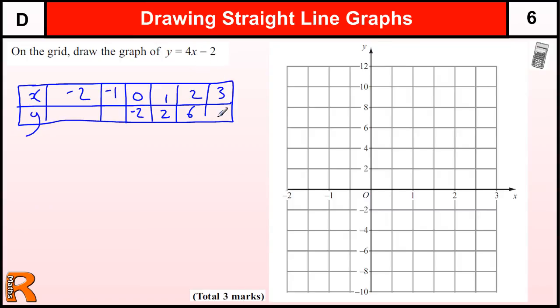I could carry that on. I could work out this: four lots of minus one take away two is minus six, or I could see there's a pattern, it's going down by four, and I can just put in the last one. Let's plot some of those values: minus two, ten very conveniently just fits on there. Then it's going up by four each time, so minus one minus six, zero minus two, one and two, two and six, and three and ten.